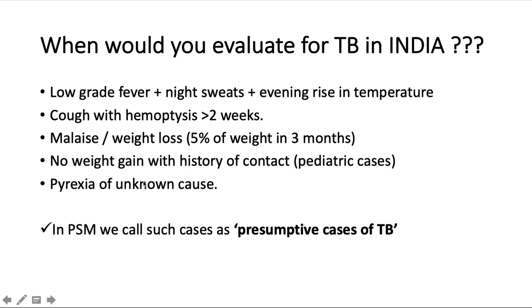For pediatric cases, no weight gain combined with a history of contact with a TB patient — such as a parent or grandparent — is indicative of TB. Pyrexia of Unknown Cause (PUC) is also a classical pointer; in India the first thing that should come to mind with PUC is TB. In PSM, we call these presumptive cases of TB — presumptive signs that need diagnostic confirmation.